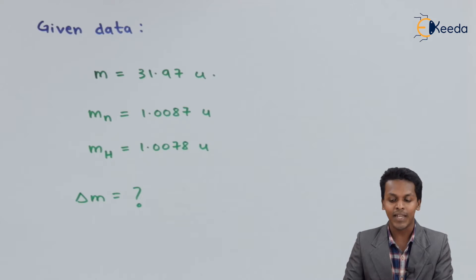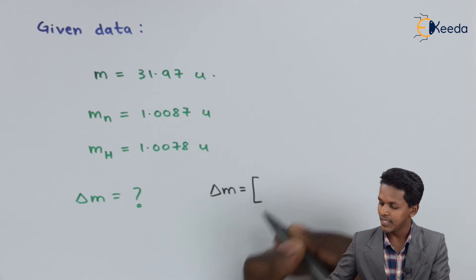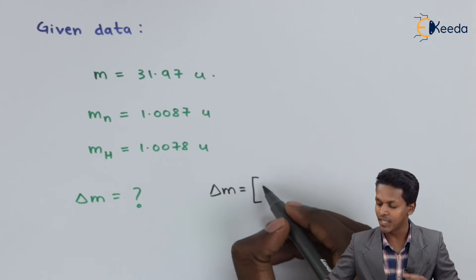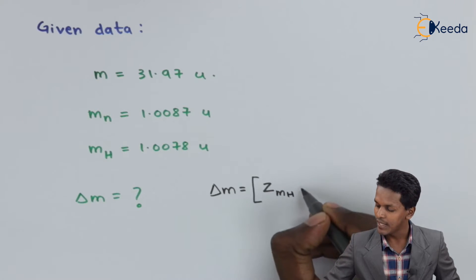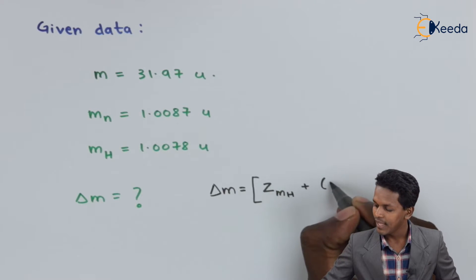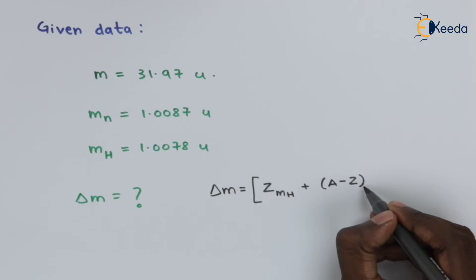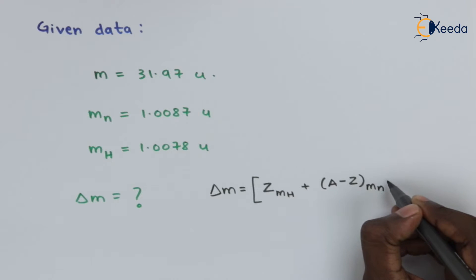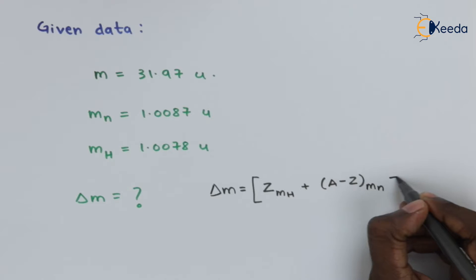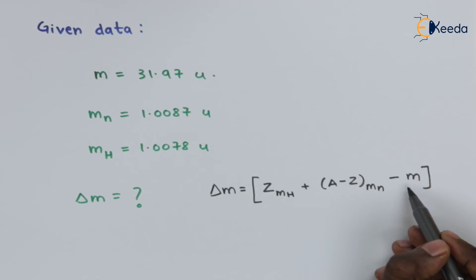For that we have a formula: delta M equals Z times M_H (the mass of hydrogen), plus (A minus Z) times M_n (the mass of the neutron), minus M, the observed atomic mass.